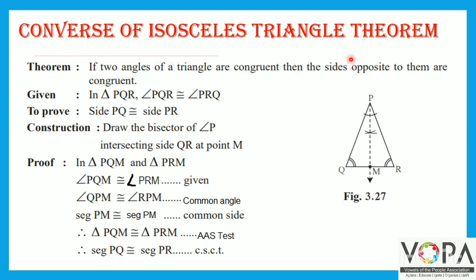Converse of Isosceles Triangle Theorem. Statement: If two angles of a triangle are congruent, then the sides opposite to them are congruent.